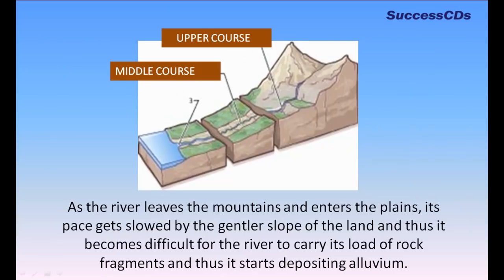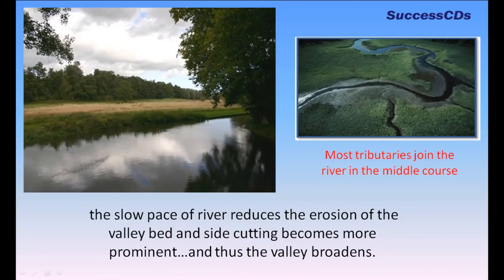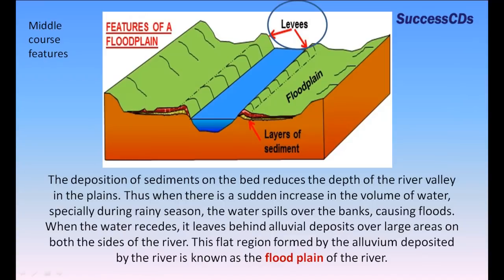As the river leaves the mountains and enters the plains, its pace is slowed by the gentler slope of the land. It becomes difficult for the river to carry its load of rock fragments and it starts depositing alluvium. The slow pace reduces erosion of the valley bed and side-cutting becomes more prominent, causing the valley to broaden. Most tributaries join the river in the middle course. The deposition of sediments on the bed reduces the depth of the river valley in the plains.